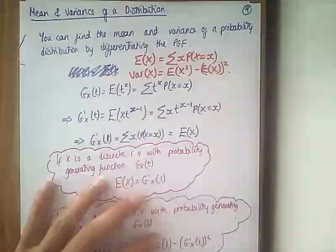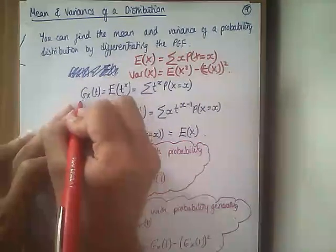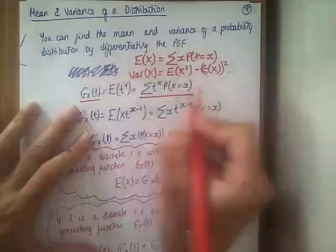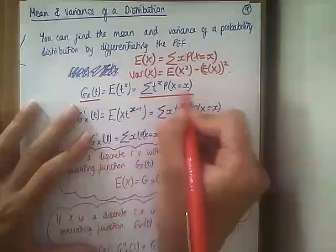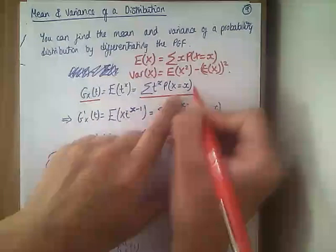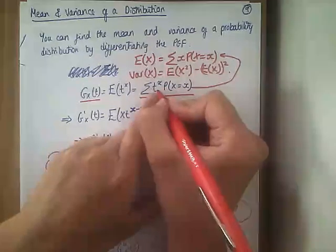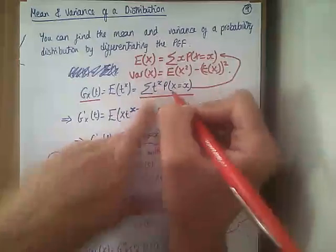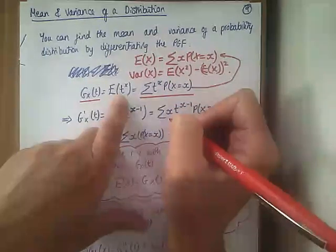Knowing that, we know that a probability generating function is given by the sum of t^x times P(X=x). That is what a probability generating function is — it's the sum of t^x times P(X=x). Because that looks identical to E(X), except instead of x we've got t^x, this must be E(t^X).